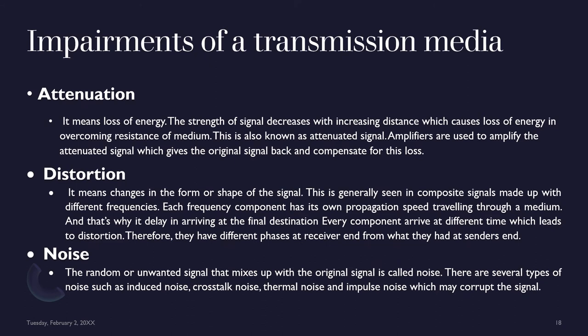Let us see impairments of transmission media. Attenuation means loss of energy — the strength of a signal decreases with increasing distance, causing energy loss from overcoming the resistance of the medium. This is also known as the attenuated signal. Amplifiers are used to amplify the attenuated signal to restore and compensate for the loss. Distortion means a change in the form or shape of the signal. This is generally seen in composite signals made up of different frequencies, where each frequency component has its own propagation speed through a medium, causing delay in arriving at the final destination.